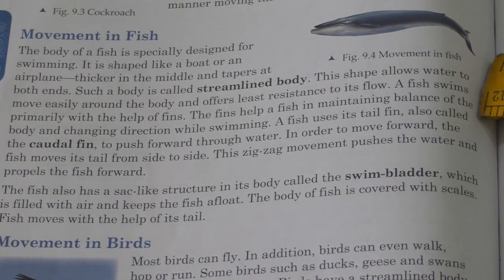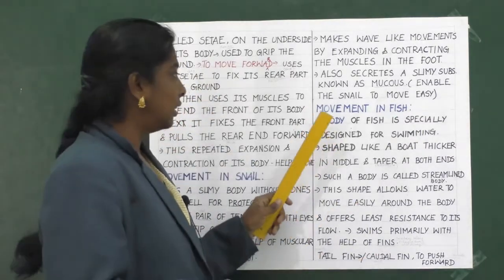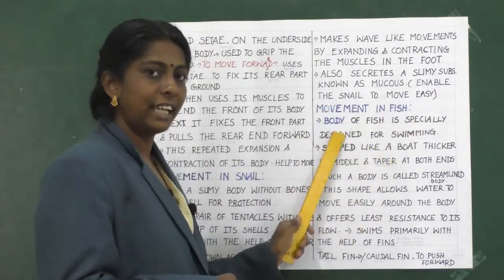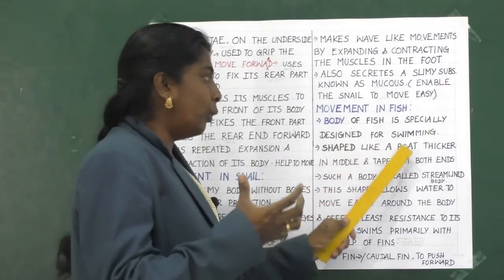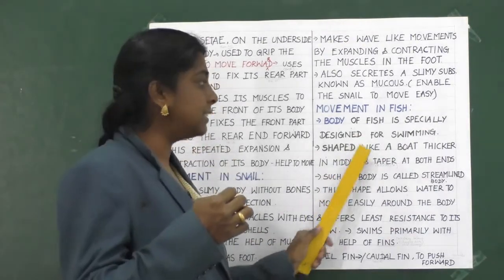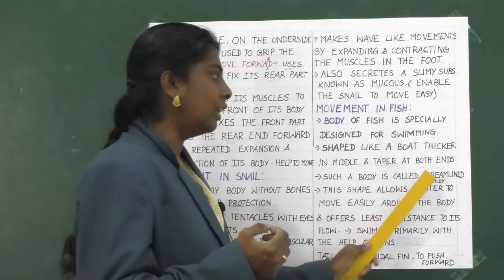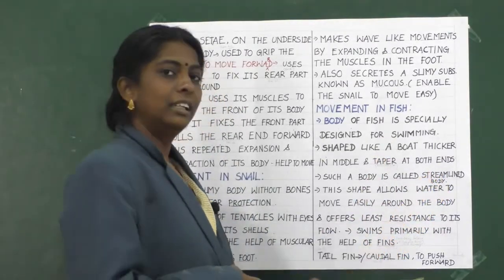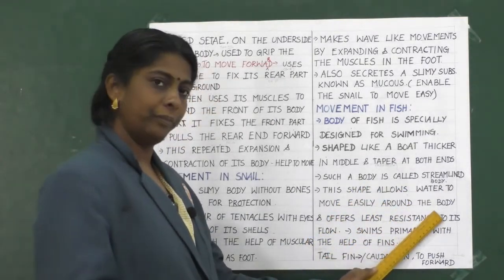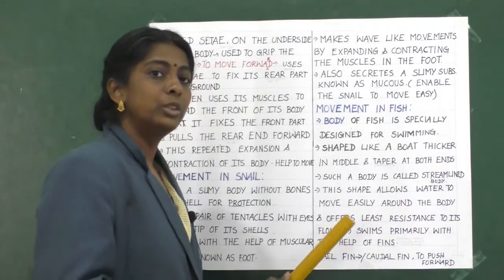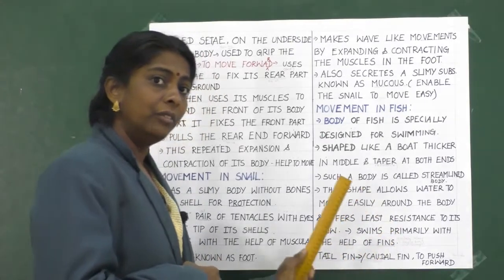Now let us learn about movement in fish. The body of a fish is specially designed for swimming. The body shape is like a boat — thicker in the middle and tapering at both ends. Such a body is called a streamlined body. This shape allows water to move easily around the body and offers the least resistance to its flow. The fish swims primarily with the help of fins.